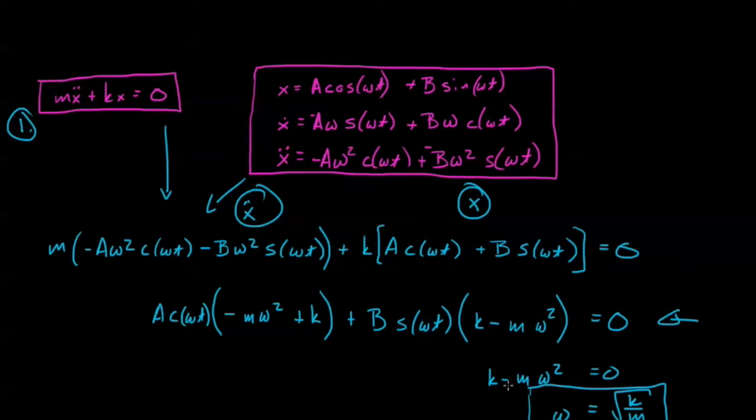Or k minus m omega squared is zero. From that we know that omega equals square root of k over m, and I have a general solution.